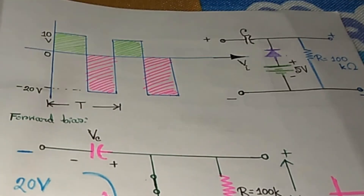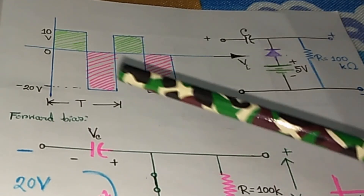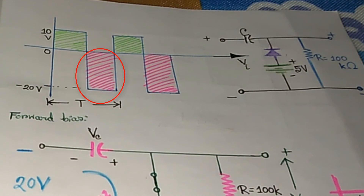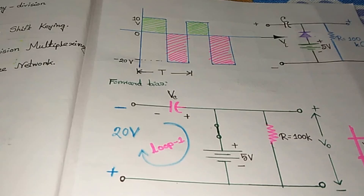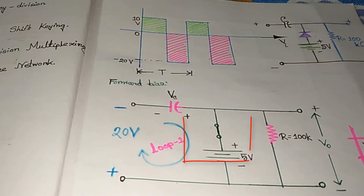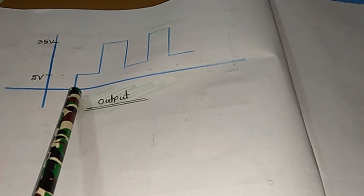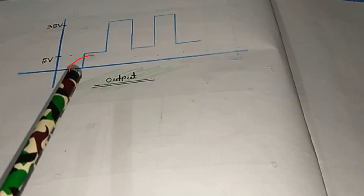Based on what we did, we identified the negative half cycle and the positive half cycle. We identified which cycle gives forward bias condition, and based on that we drew and analyzed the diagram to find the output waveform.